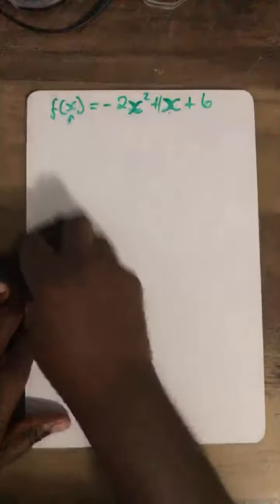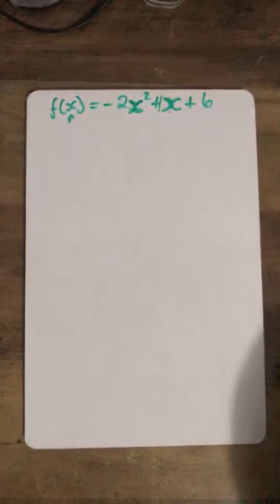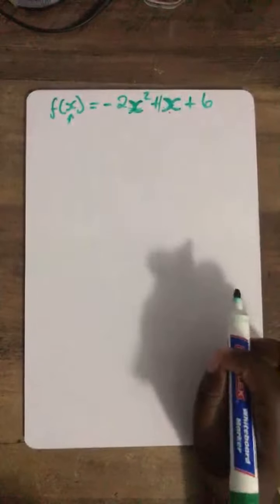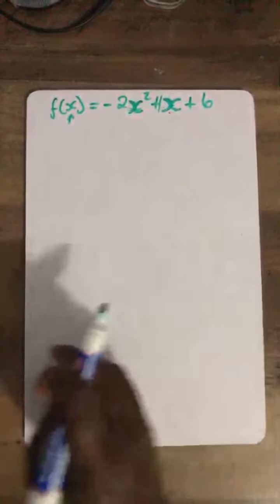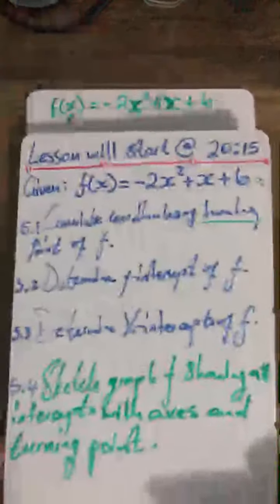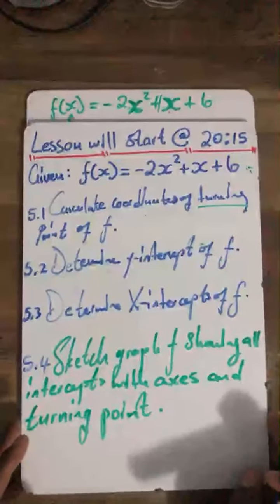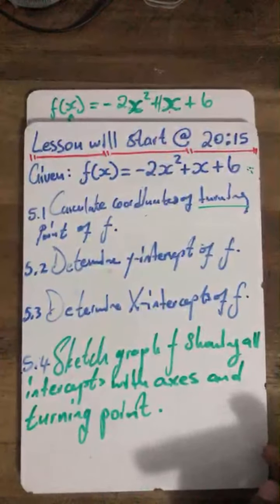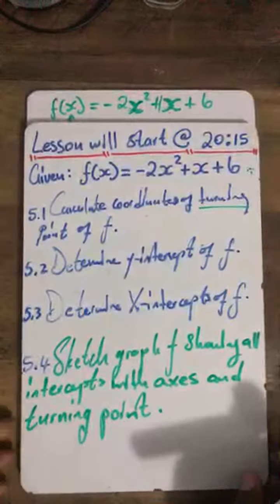And then now, we move on to 5.3. So, there we have 5.3. What is it saying? Determine the x-intercepts.